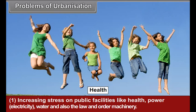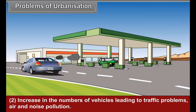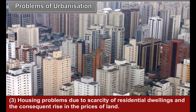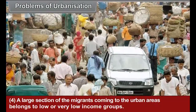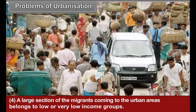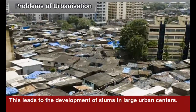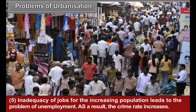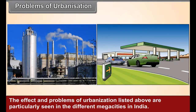Problems of urbanization: Increasing stress on public facilities like health, electricity, water supply, and the law and order machinery. Increase in number of vehicles leading to traffic problems, air and noise pollution. Housing problems due to scarcity of residential dwellings and the consequent rise in the prices of land. A large section of the migrants coming to urban areas belongs to low or very low income groups, which leads to the development of slums in large urban centers. Inadequacy of jobs for the increasing population leads to unemployment, and as a result, the crime rate increases. These effects and problems of urbanization are particularly seen in the different megacities in India.